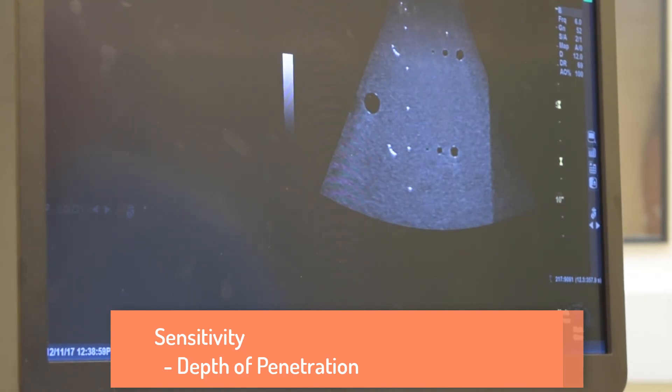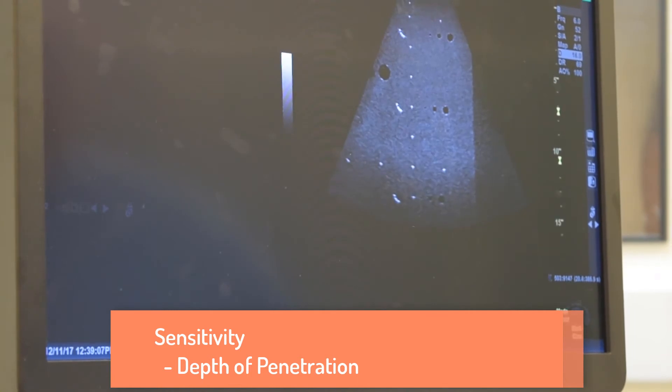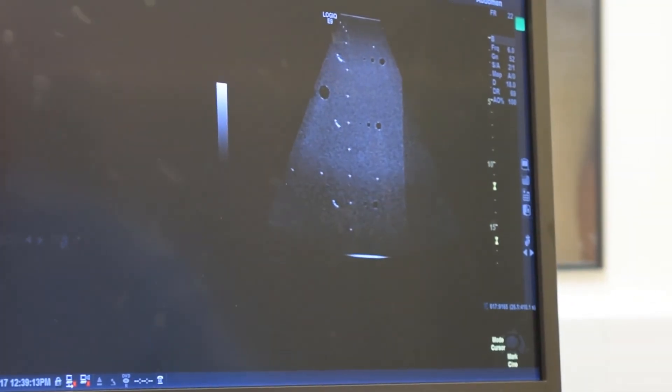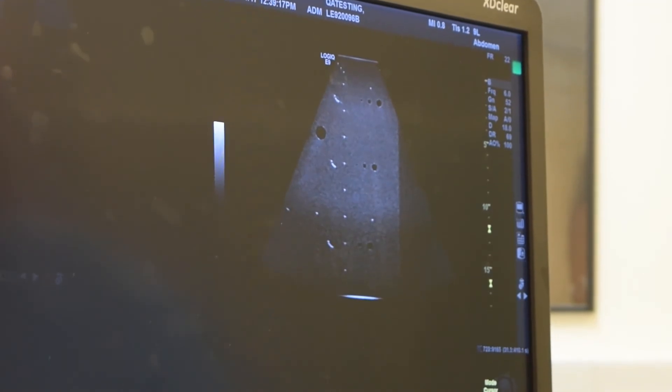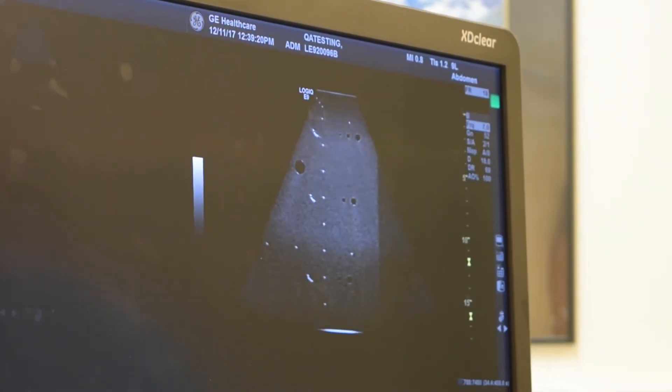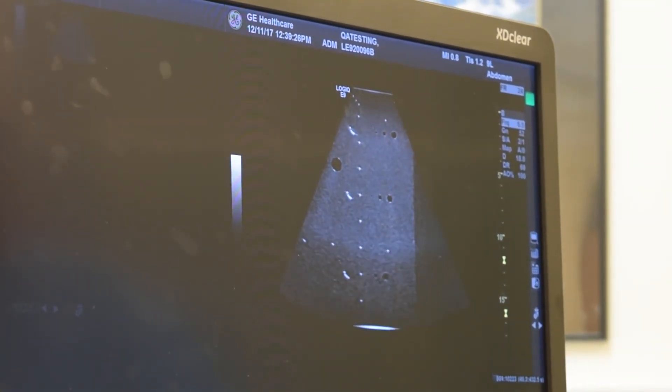A third test done during each survey is to check on the overall sensitivity of the scanner. This will be done using a depth of penetration test. We set the image field of view to as large a depth as possible. Set the output transmit level to a hundred percent, which is the typical setting for most scans, but do check and make sure it is a hundred percent. Set the gain so that you can just barely see noise, and then adjust the frequency, which we're changing here, so that it's in a mid-range of the frequency ranges available on the machine.